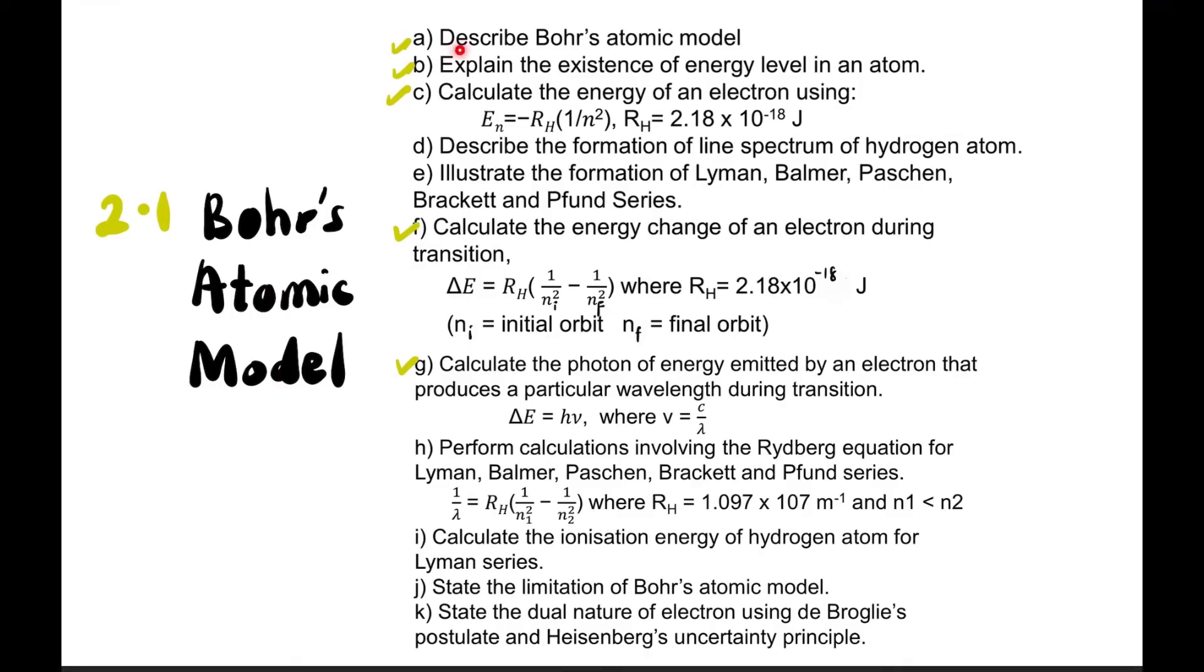At the end of this lesson, students should be able to: describe Bohr's atomic model, explain the existence of energy levels in an atom, calculate energy of an electron and the energy change of an electron during transition, and calculate the photon energy emitted by electron that produces a particular wavelength during transition. This is part one.